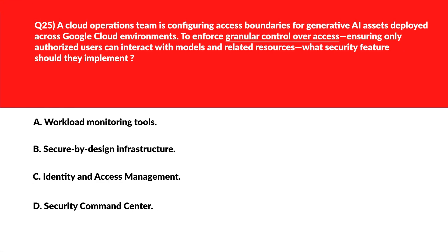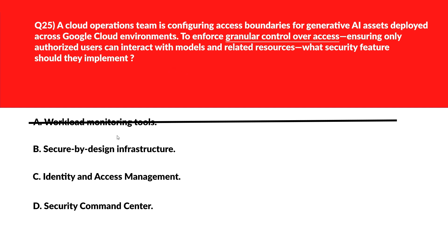Let's look at the next question. Option A says workload monitoring tools — these focus on performance and anomaly detection, not on access boundaries. Wrong answer. Option B says secure by design infrastructure — this ensures foundational security but doesn't manage user-level permissions. Wrong choice.